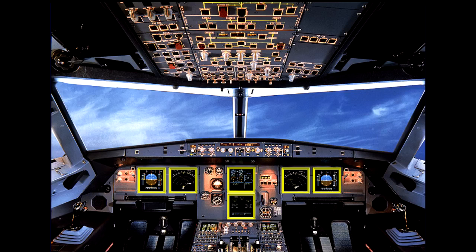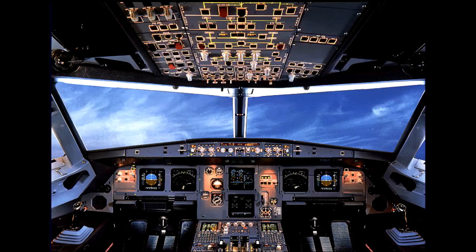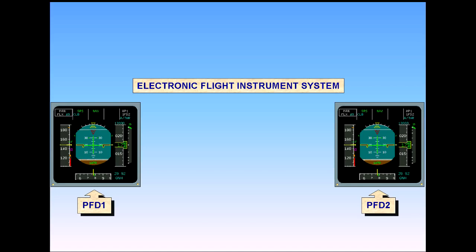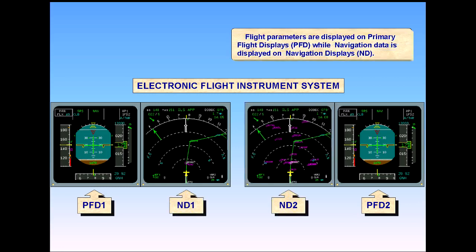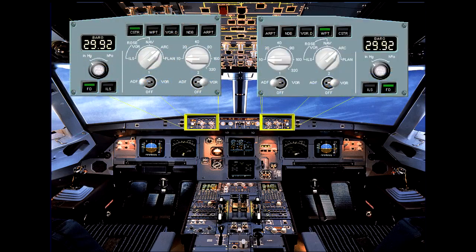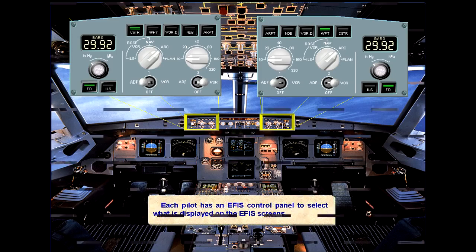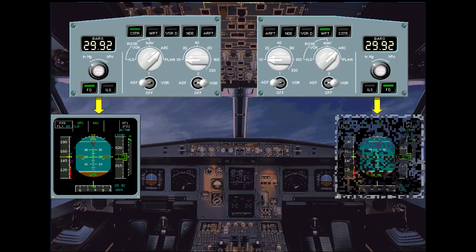The four EFIS displays provide the pilots with flight data to help them operate the aircraft in a safe and efficient way. Flight parameters are displayed on primary flight displays, PFDs, while navigation data is displayed on navigation displays, NDs. Each pilot has an EFIS control panel to select what is displayed on the EFIS screens. The EFIS control panels are divided into two sections: one section associated with the PFD and the other with the ND.